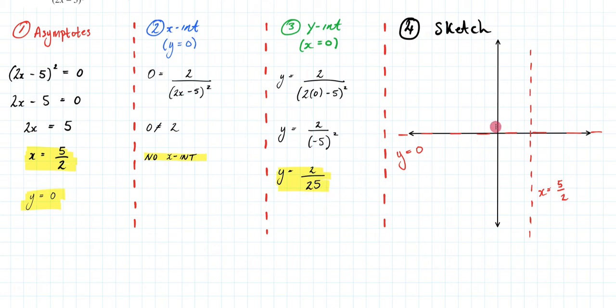So that is going to be here. I'll mark that in. I'll put it up here: 0, 2 over 25. And now that I've done all that, I can give this a sketch. So it's going to look something like this, approaching my asymptotes. Perfect.